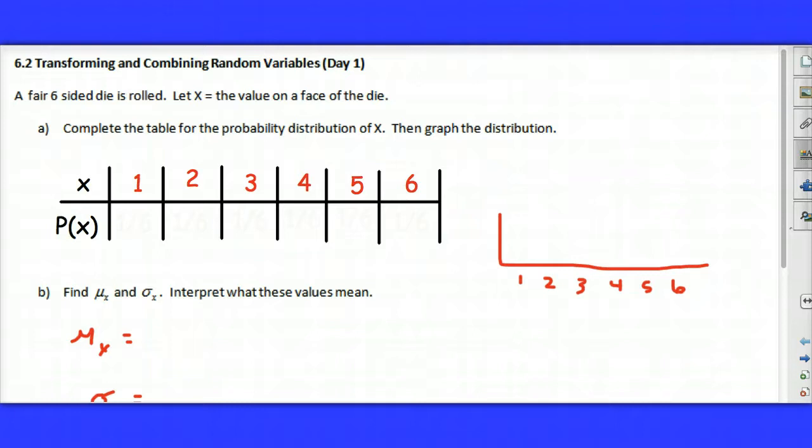Today we're going to take a look at what happens when we transform a random variable. For example, let's say we multiply every value of a random variable by 5, or we add 10 to every value of a random variable. We'll look at what happens to the mean, standard deviation, and shape of the distribution.